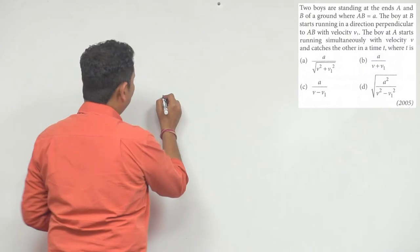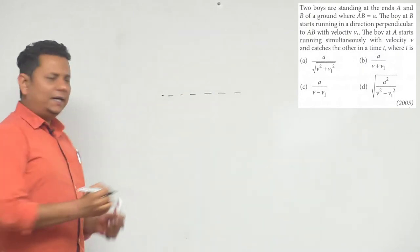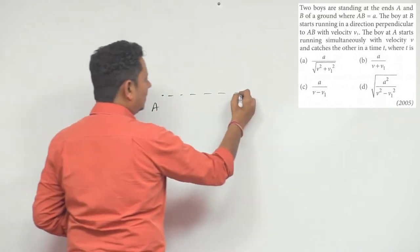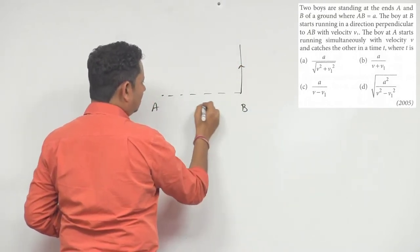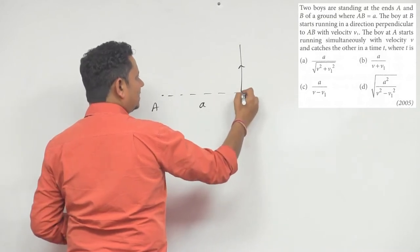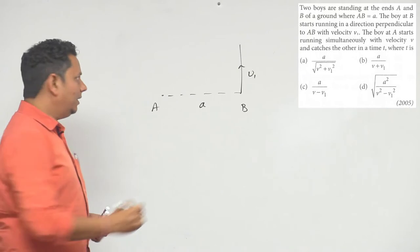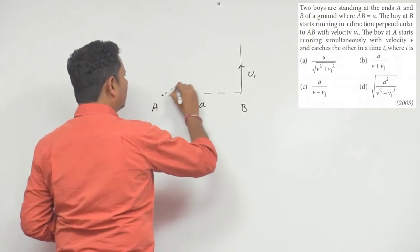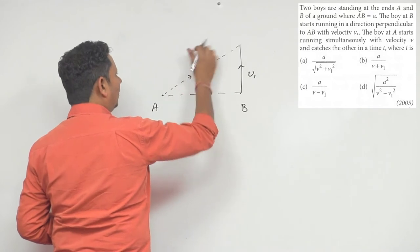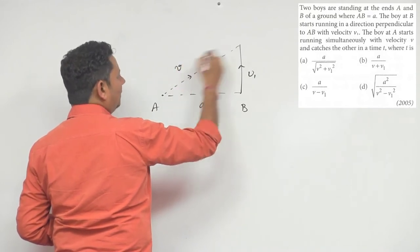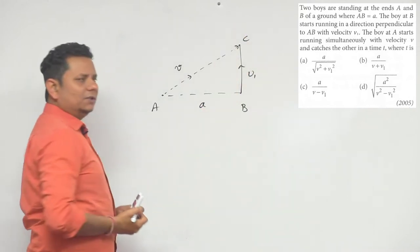So now here is the scenario. Let's say this is where A was standing and this is where B is. B starts running and the distance between them is A, and B starts running in this direction with velocity V1. A starts running in some direction with velocity V or V0, and let's say they meet at this point which is called C.